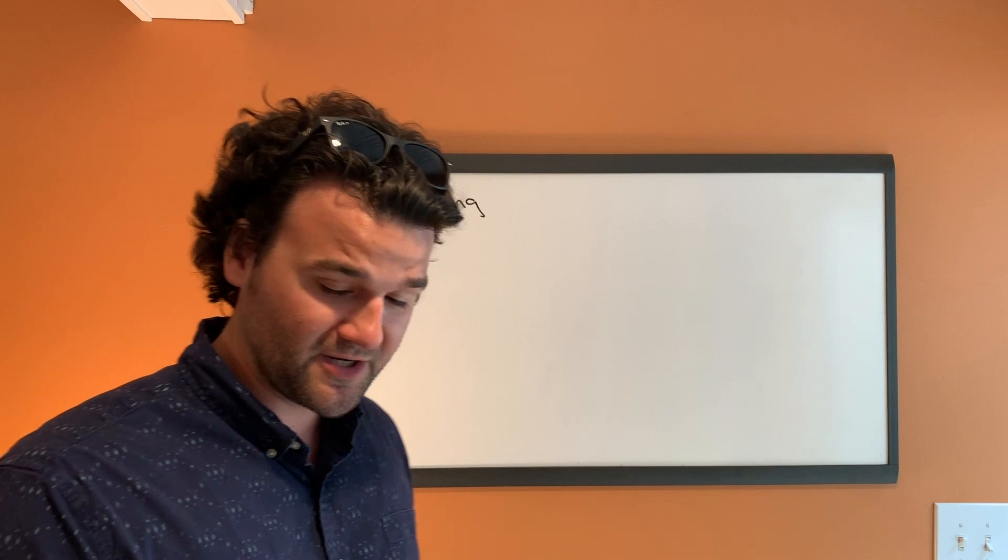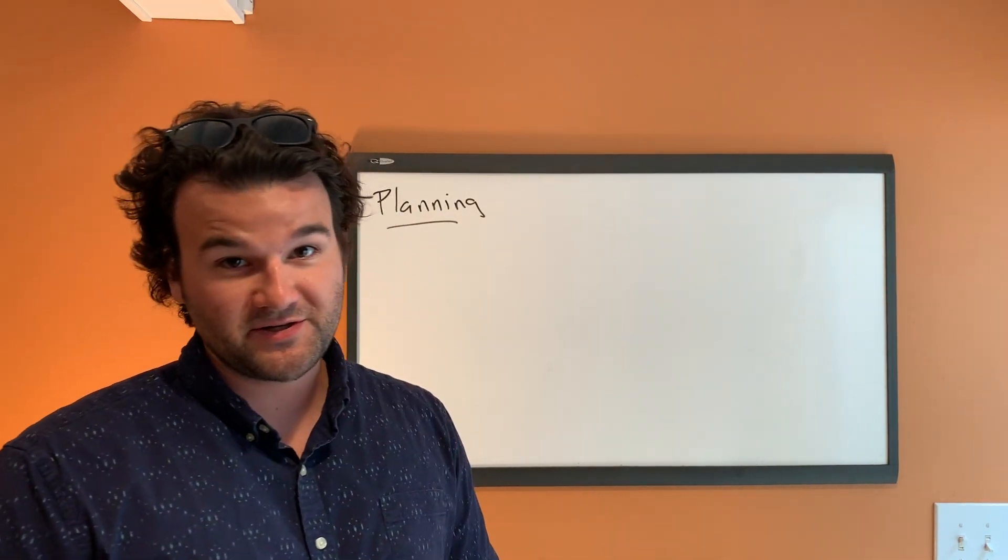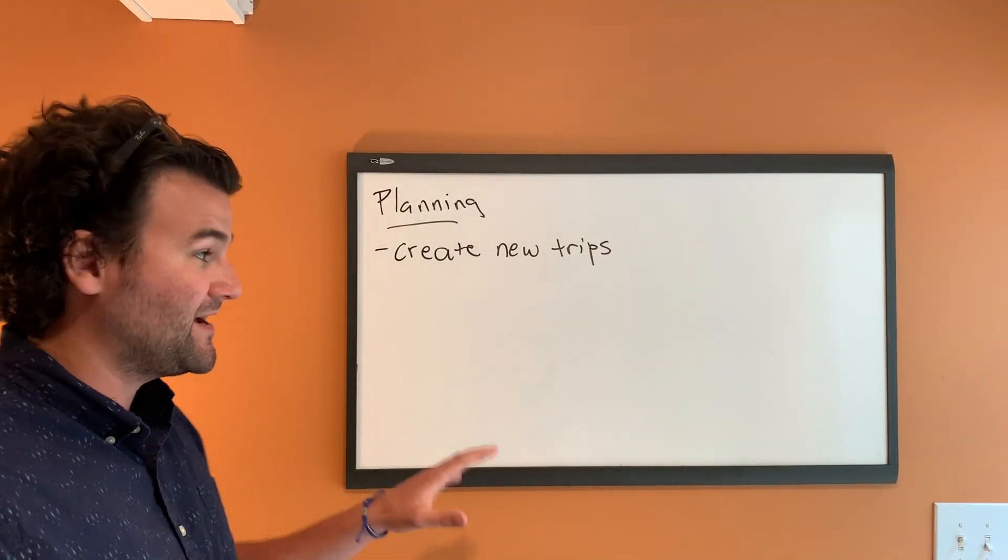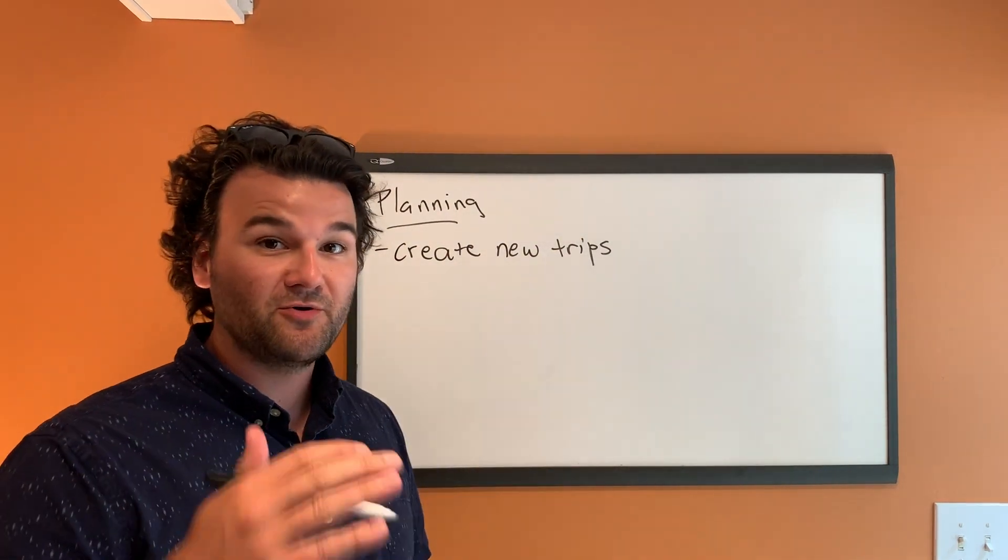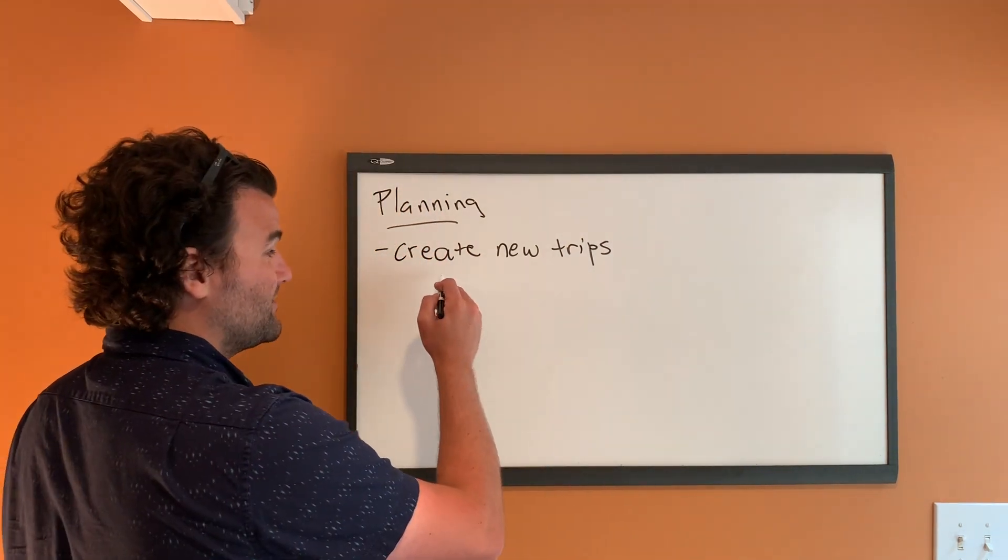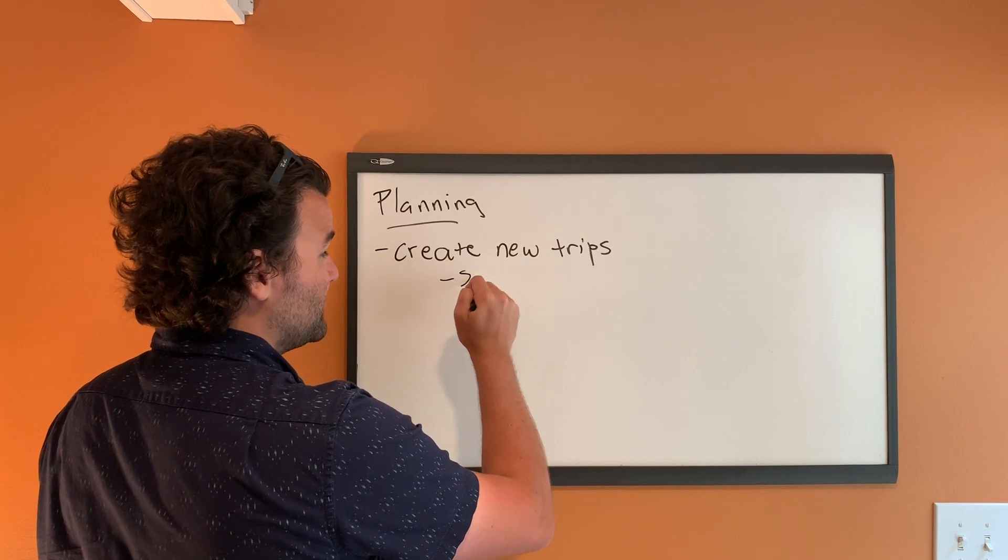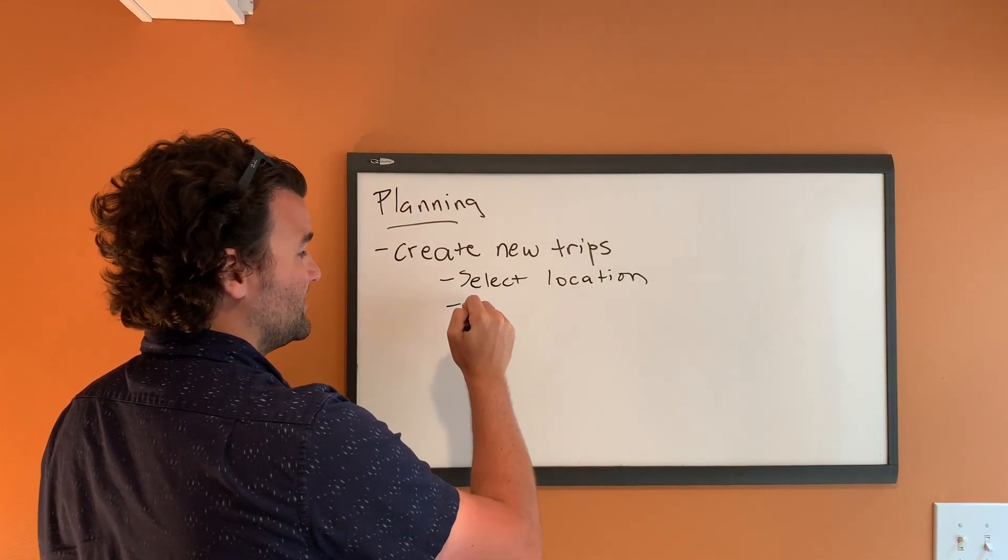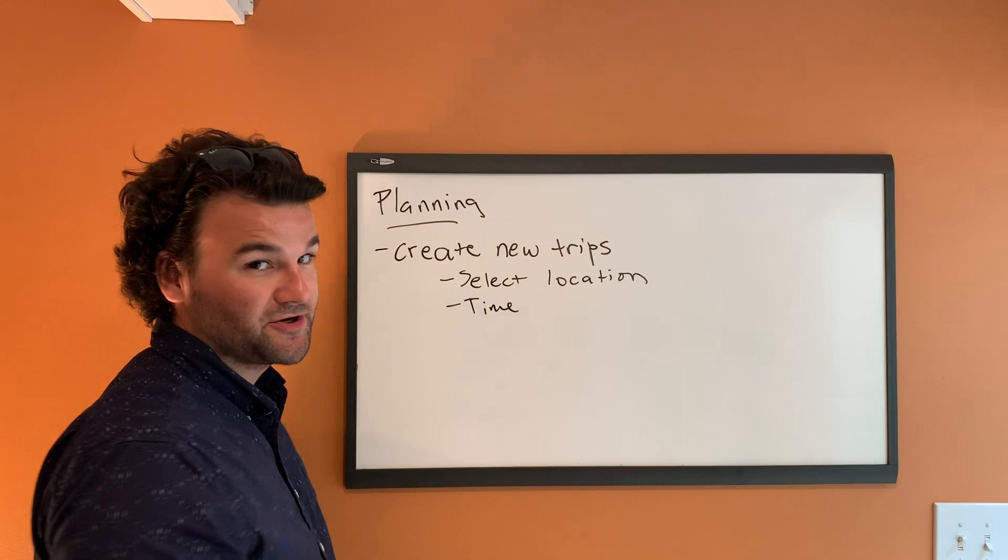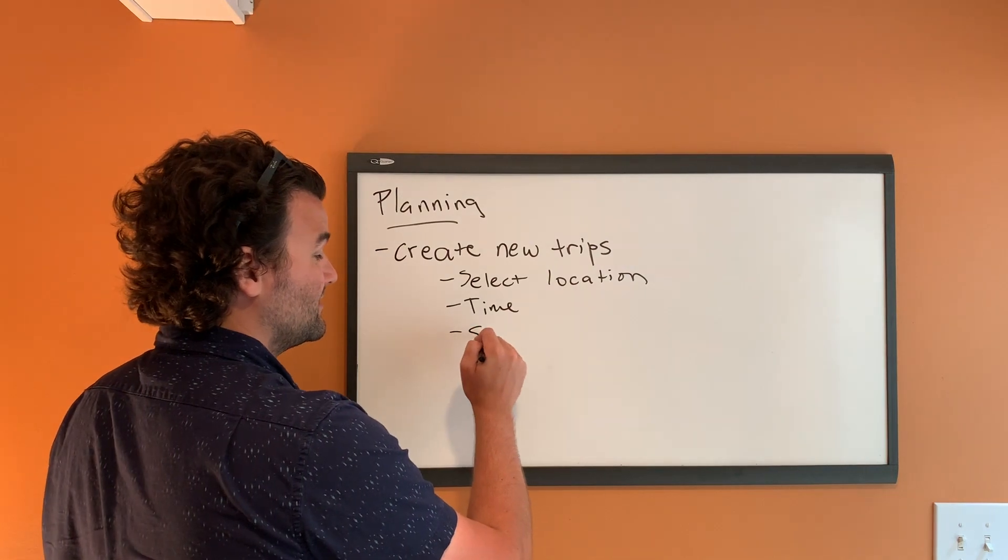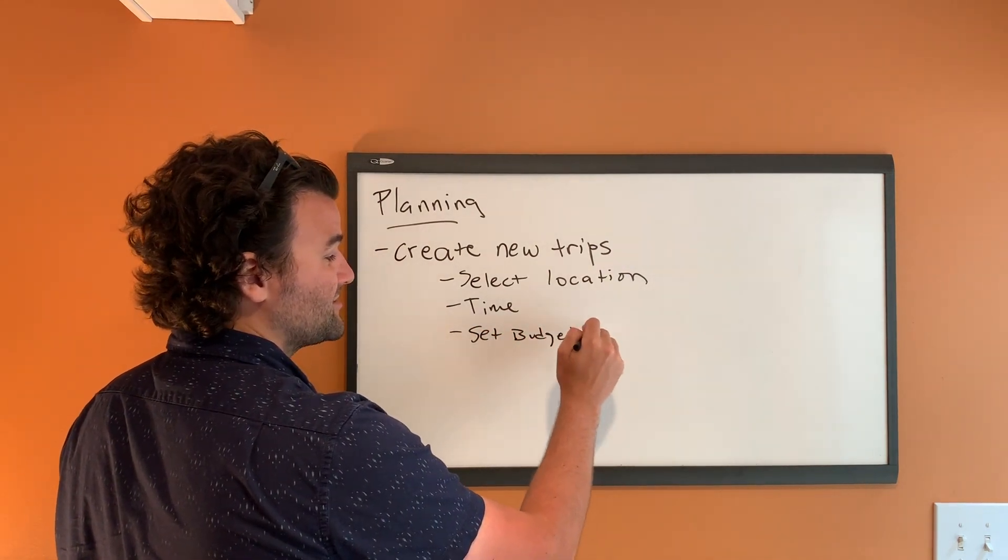So a few things we need to know are the features, like what features do we want on the app? Again, the app that we're going to be building is a budgeting app for travel. We want to be able to go in and say we're going to go on a new trip and pick the location, say the date range and the time. And then within this, we want to be able to select location, and we want to be able to put the time in, the time of the trip. And then we also want to be able to set our budget, right? This is on a daily basis.